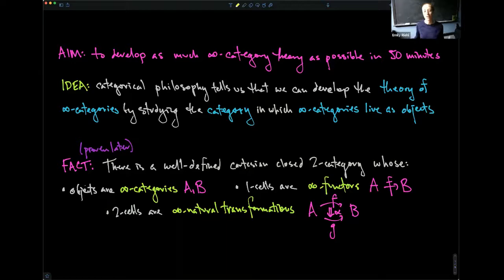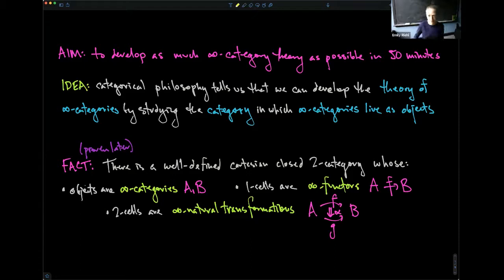The key fact that will support all the theorems of this talk is that there is a well-defined two-category that is Cartesian closed — it has products, internal homs, and a terminal object. This two-category has infinity categories as objects, infinity functors as one-cells, and infinity natural transformations as two-cells. The setting for everything I'm going to say is a two-category — I really do mean a two-category, not a bicategory.